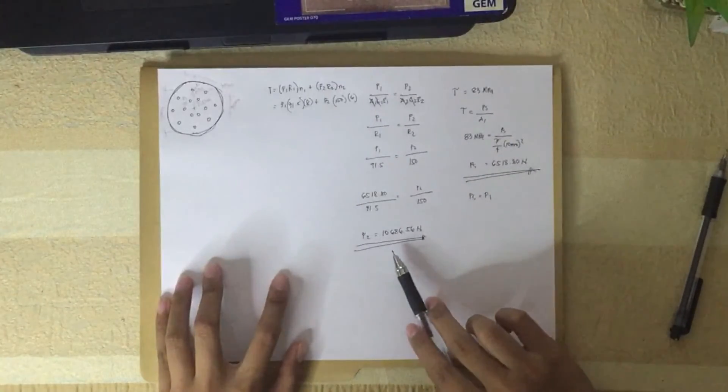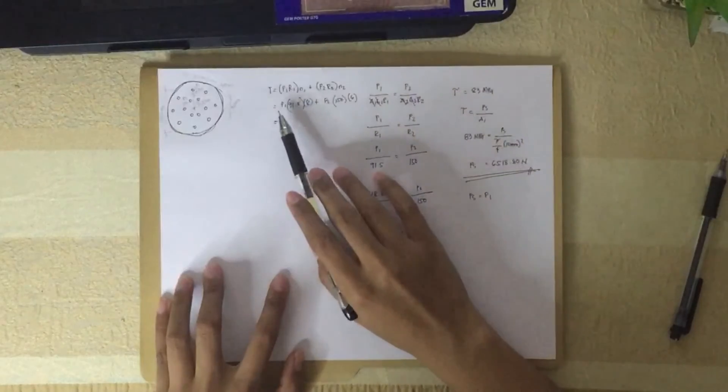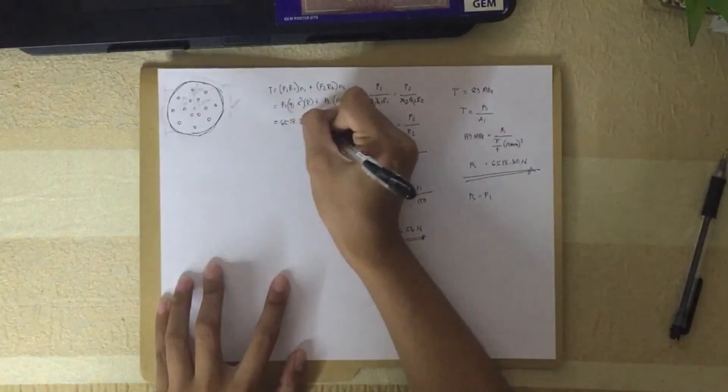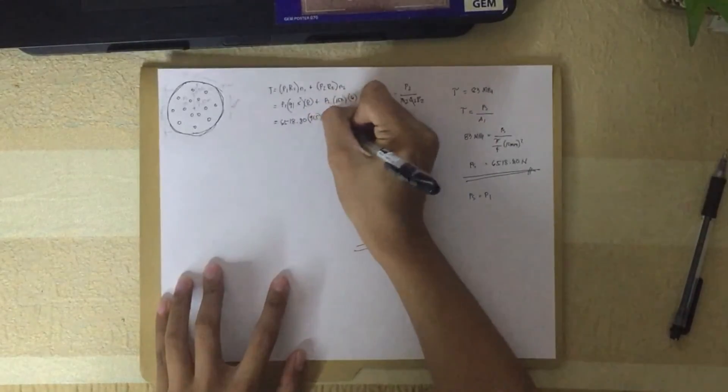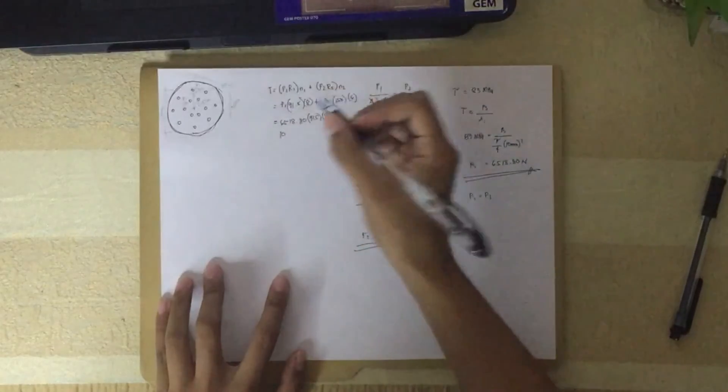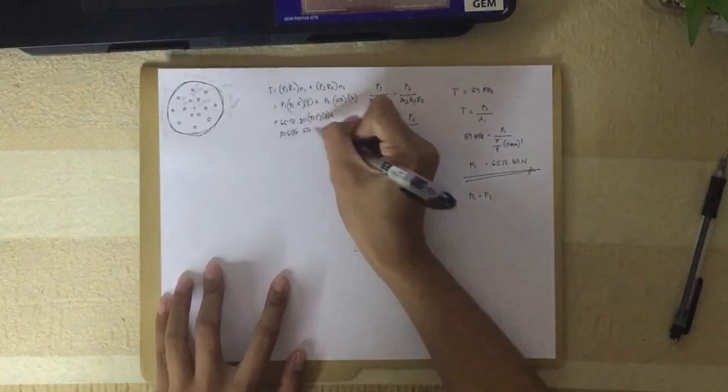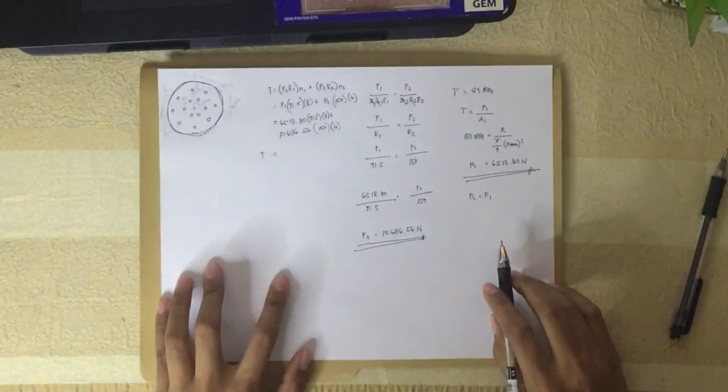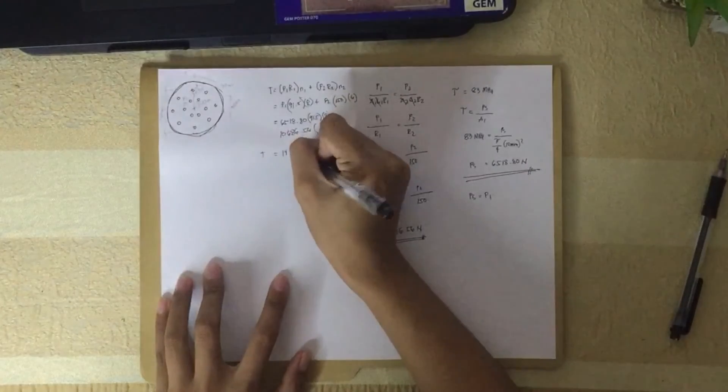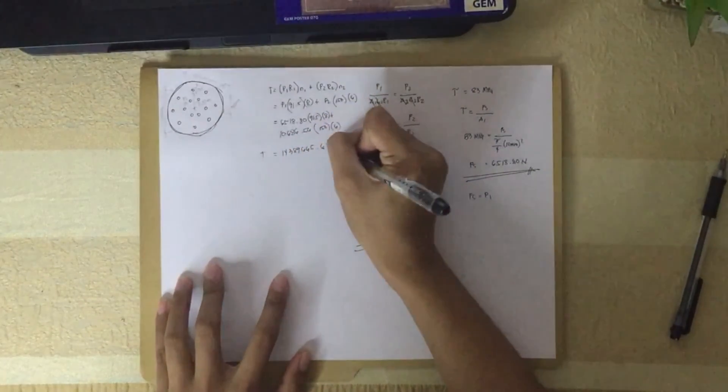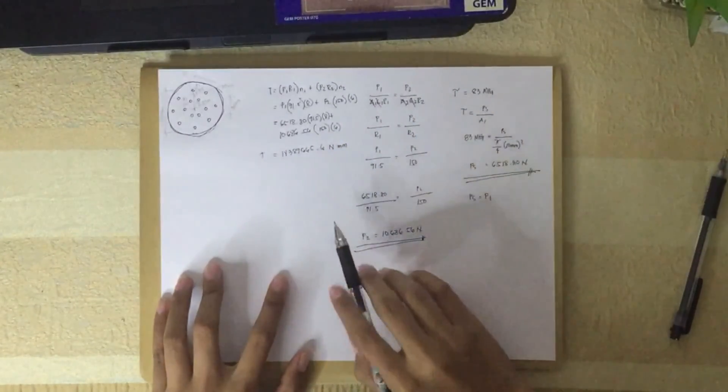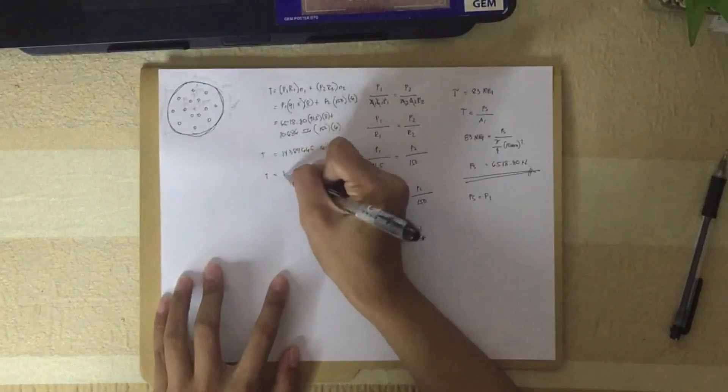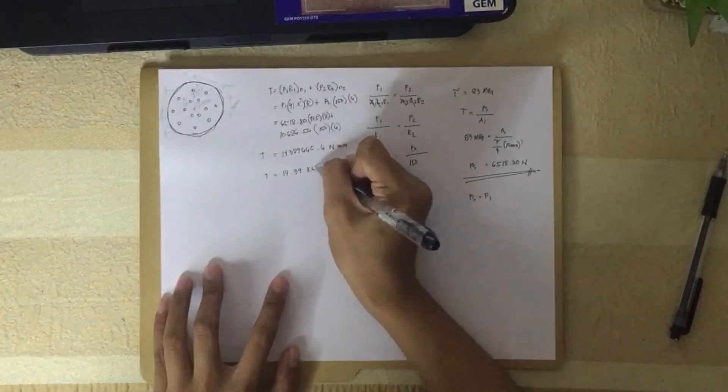Now we have P1 and P2, so we can find the total torque capacity. Substituting: 6518.80 times 91.5 times 8 plus P2, which is 10686.56 times 150 times 6. This equals 14389665.6 Newton-millimeter. Converting to kilonewton-meter by moving the decimal point, this equals 14.39 kilonewton-meter.